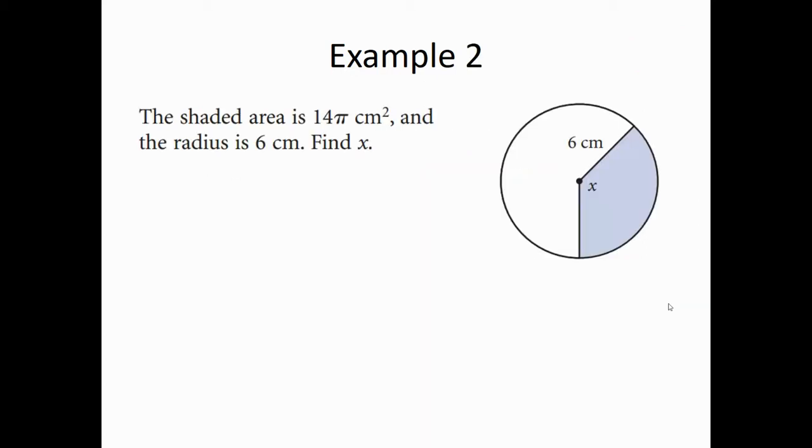Another example where this time we're given the shaded area as 14 pi, and so we know that that is equal to x over 360 times pi r squared. Because that's the formula for the area, but we're given the area. So if we're going to figure out what x is, we just plug in the radius into our formula first right there. So we get x over 360 times 36 pi.